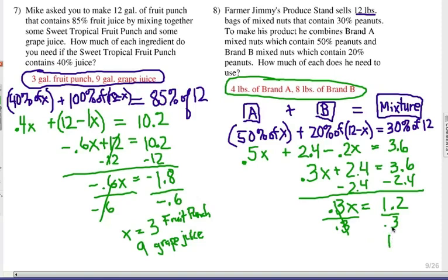So, we're going to have 4 of brand A, which would make 8 of brand B because we know it's a total of 12.